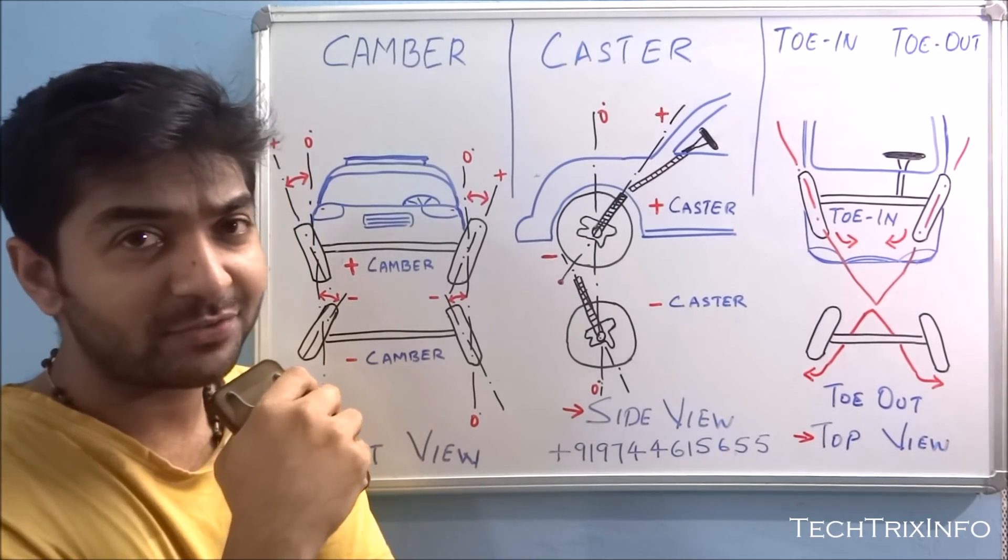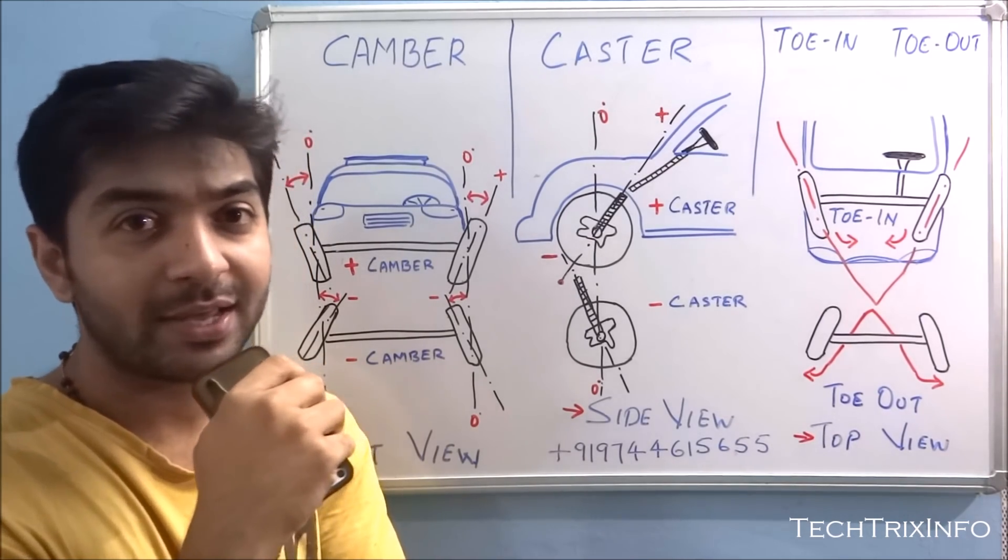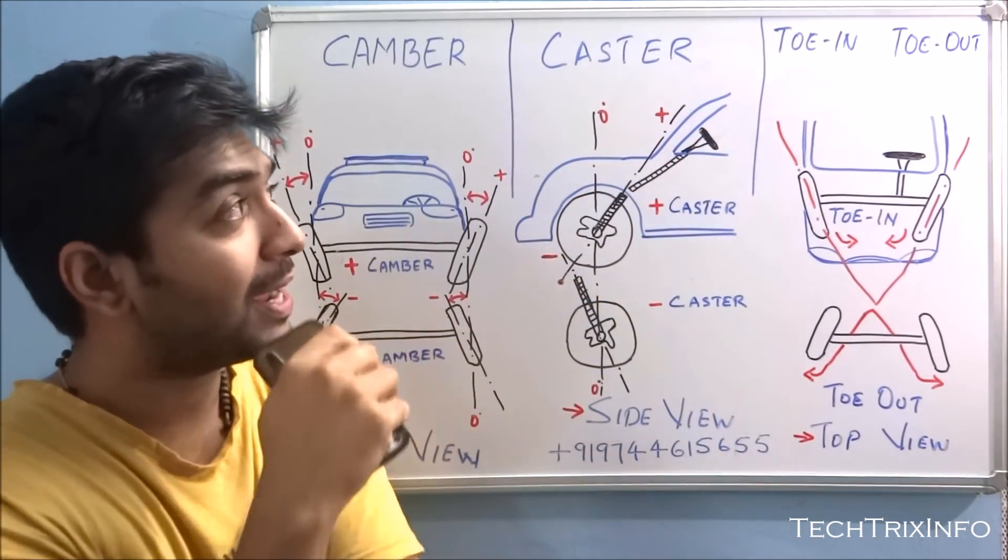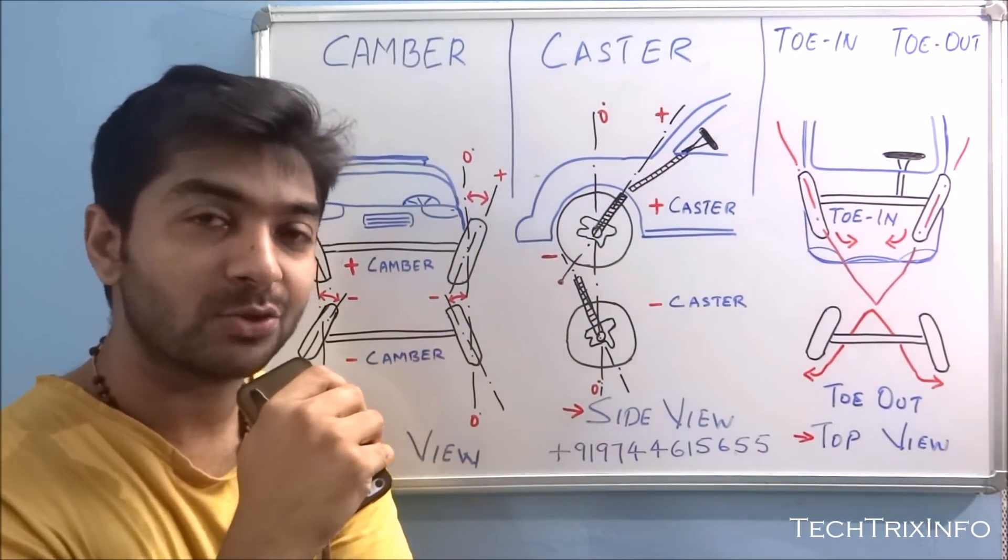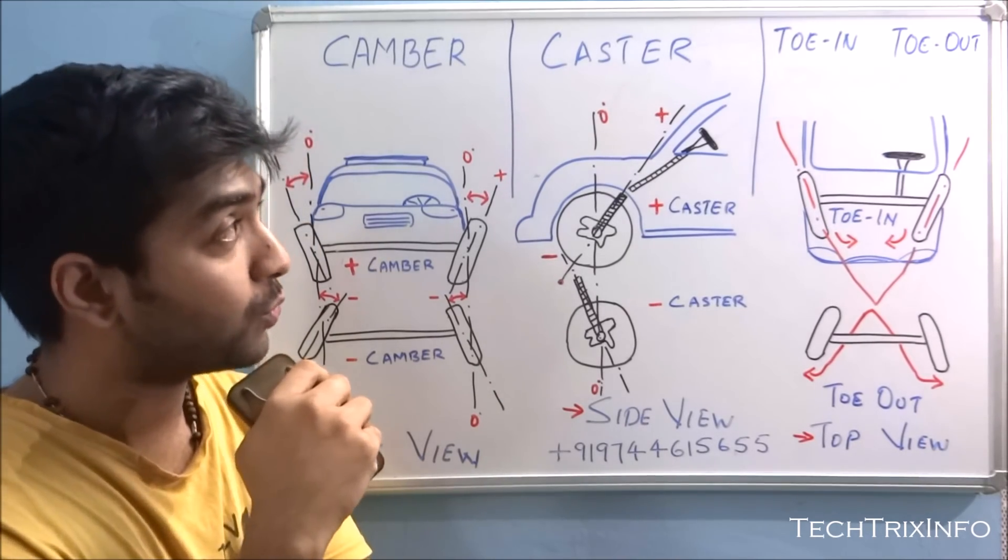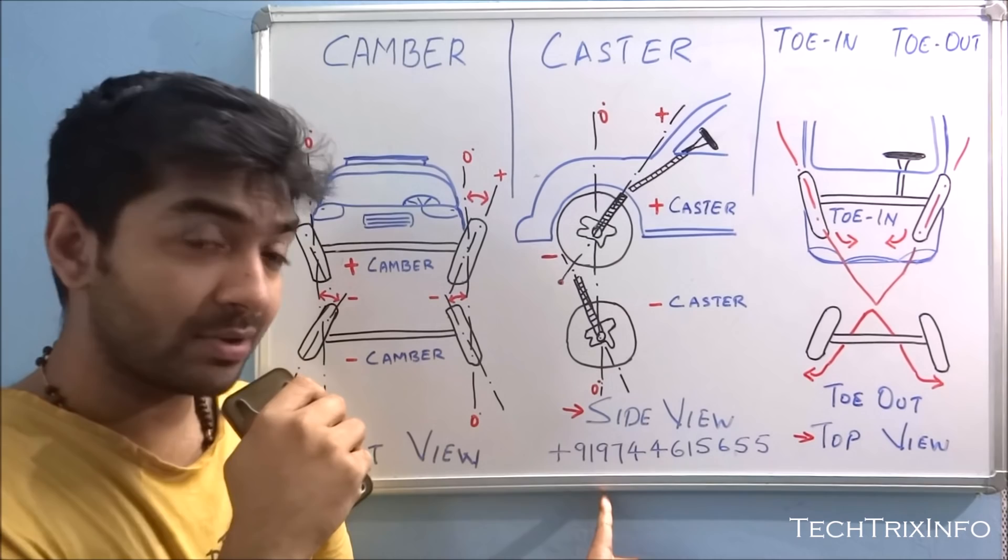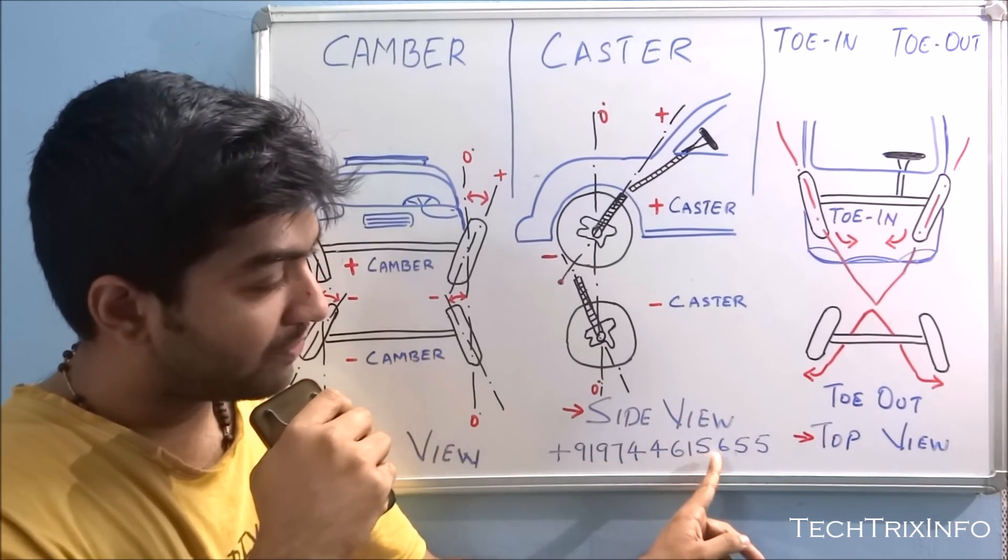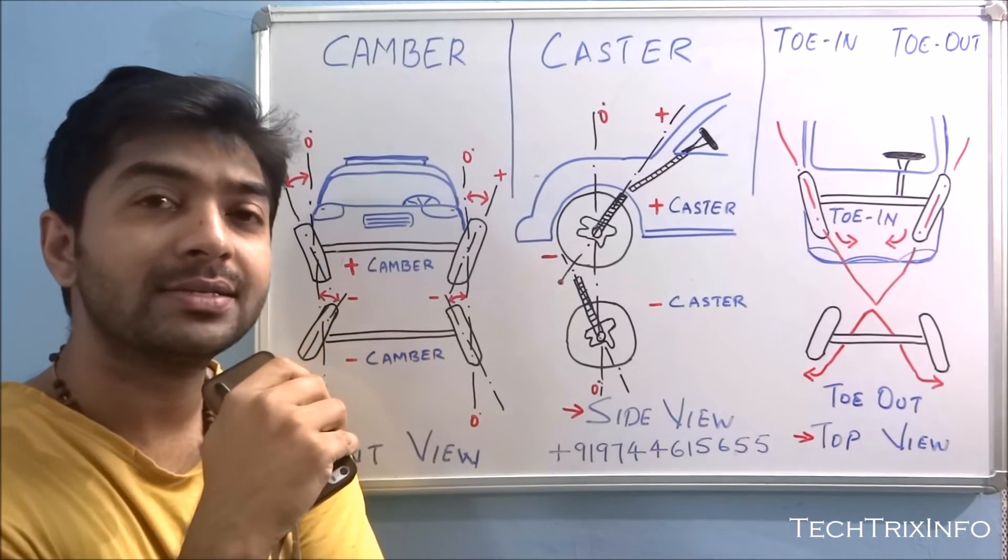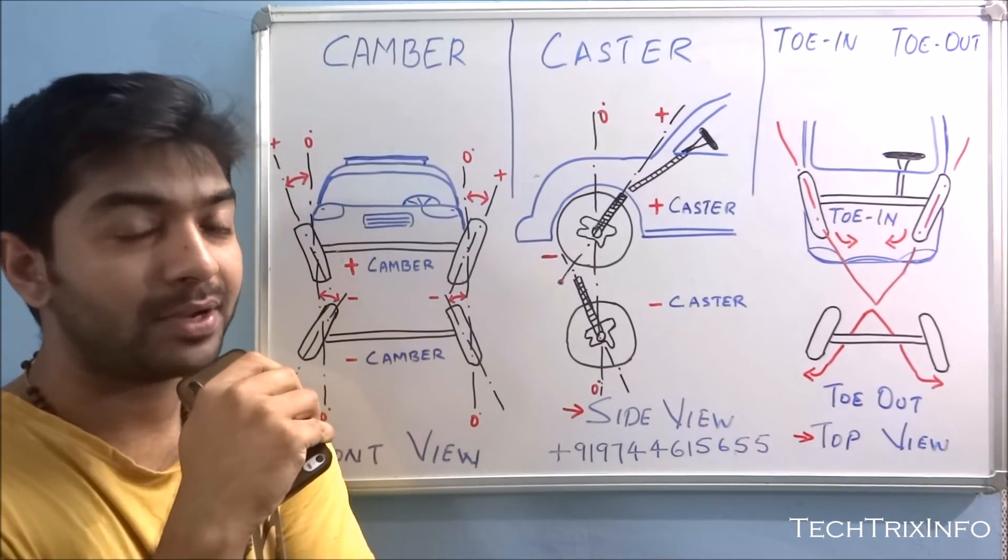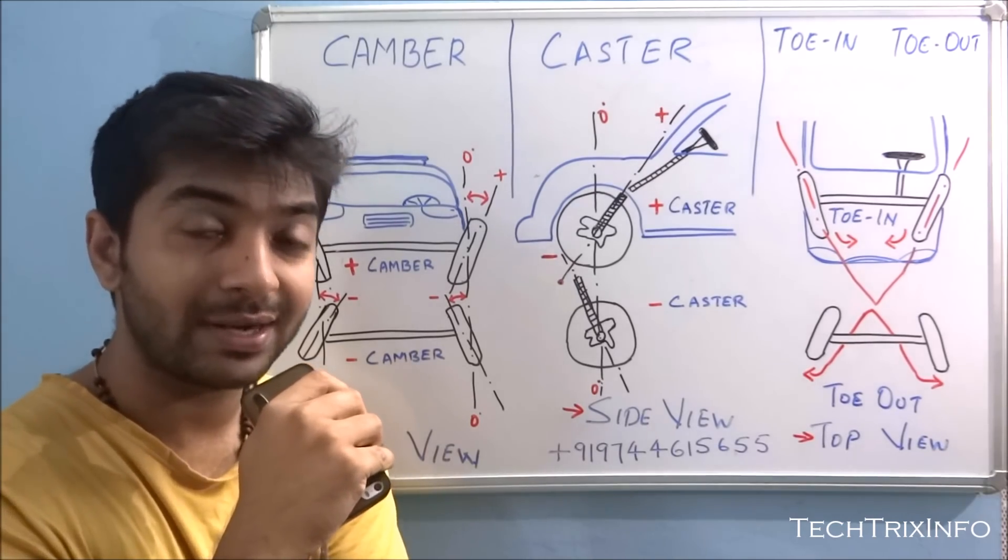Hi guys, welcome to Tech Tricks Info. This is Josh here. Today we'll be learning about caster, camber, toe-in, and toe-out, just the basics of it. We have started an initiative called Learn Engineering through WhatsApp. This is a WhatsApp number: +91 9744615655. You can send your name as a WhatsApp message to this number and start getting updates. You can also ask your doubts. We'll directly respond to it.